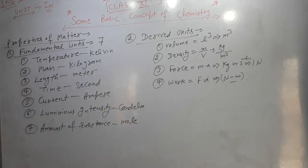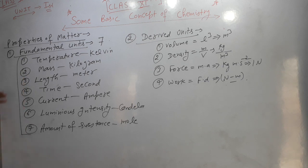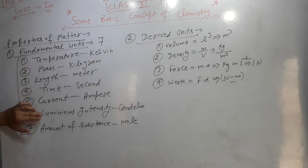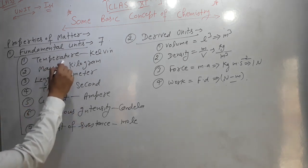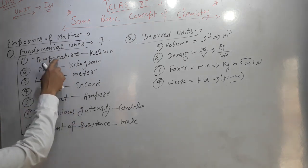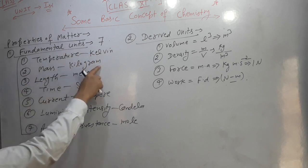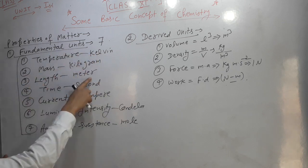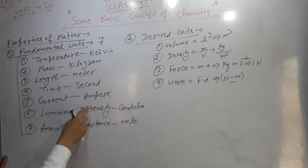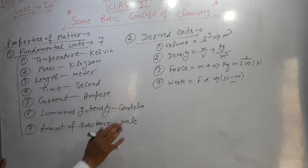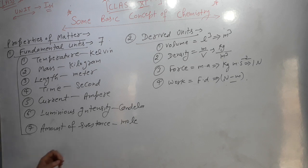There are seven important fundamental units: temperature (Kelvin), mass (kilogram), length (meter), time (second), electric current (ampere), luminous intensity (candela), and amount of substance (mole).